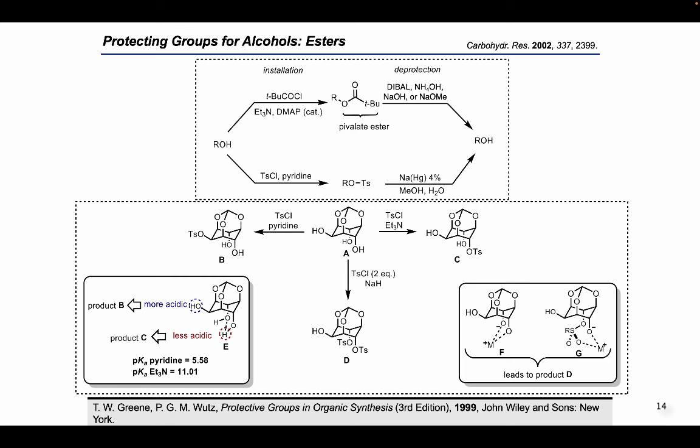Protection of an alcohol functional group by esterification sometimes offers advantages over use of acetal or ether groups, because esters are generally stable under acidic conditions and are especially useful in protection during oxidations. Tert-butyl esters, also known as pivaloate esters, can easily be prepared from alcohols by reaction with pivaloyl chloride in the presence of a base and DMAP as catalyst to increase the reaction rate. The steric bulk of the tert-butyl group makes these esters resistant to nucleophilic attack, including hydrolysis under mild basic conditions.